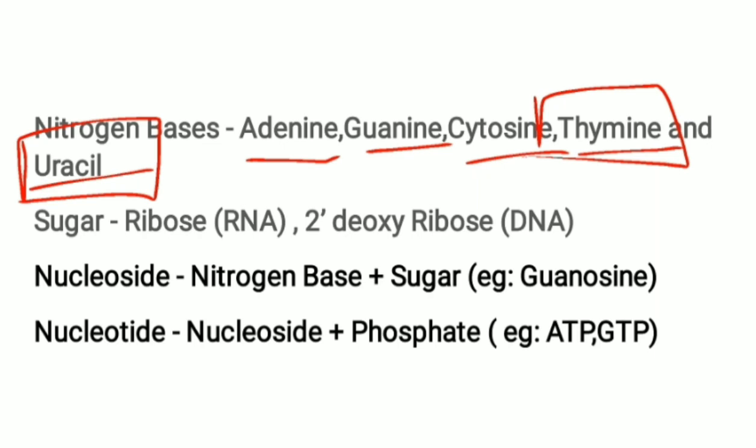The other three bases — adenine, guanine, and cytosine — are common to both DNA and RNA. The sugar present in RNA is ribose, and the sugar present in DNA is 2'-deoxyribose.